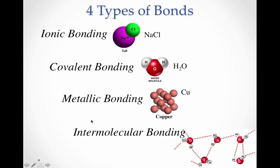In an earlier video we talked about four types of bonds: three molecular types of bonds and then intermolecular bonding. These different types of bonds actually lead to different physical properties.